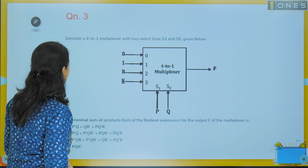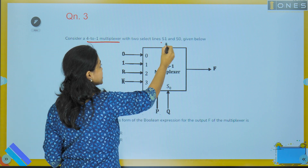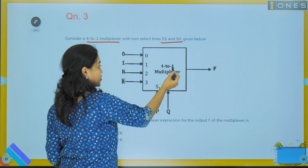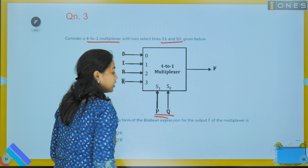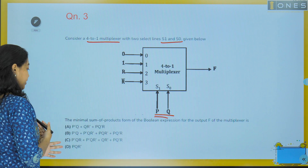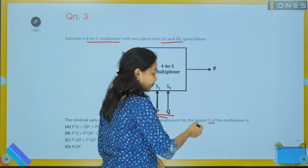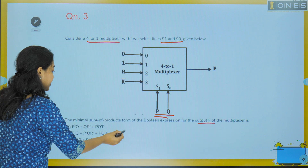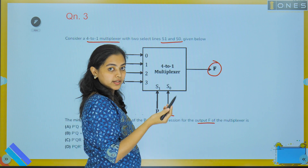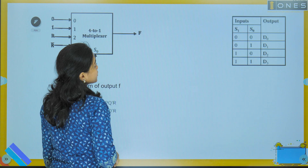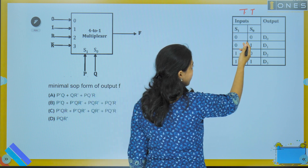Moving to question 3: consider a 4-to-1 mux with two select lines S1 and S0. The question asks for the minimal sum of products form of the boolean expression for the output F. We construct a truth table: S1 and S0 take values 00, 01, 10, 11 corresponding to outputs d0, d1, d2, d3.